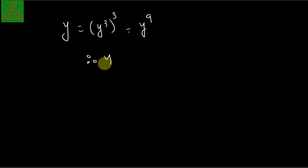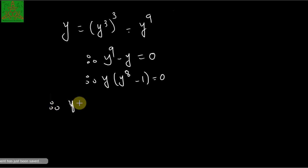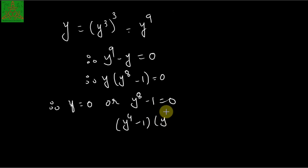Therefore we have y raised to 9 minus y equal to zero. This can be written as y times (y raised to 8 minus 1) equal to zero. This equation has roots y equal to zero or y to the power 8 minus 1 equal to zero. Now y to the power 8 minus 1 has two factors: (y to the power 4 minus 1) and (y to the power 4 plus 1) equal to zero. But y to the power 4 plus 1 will give complex roots.